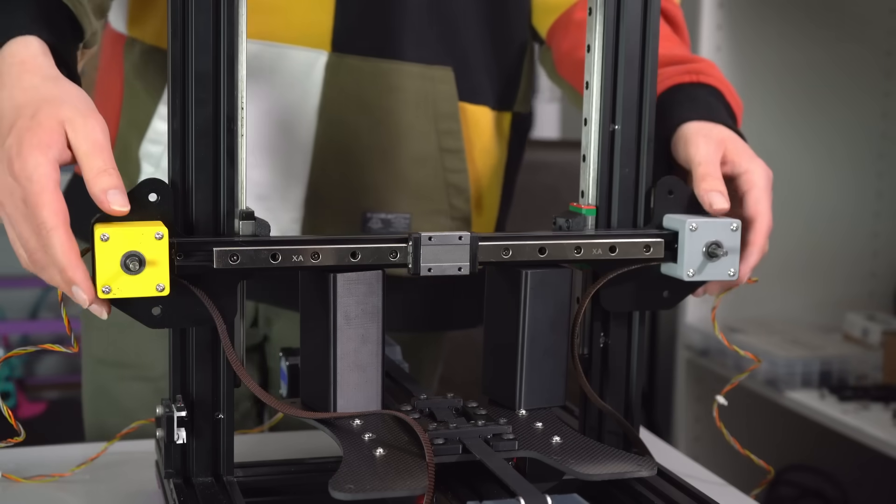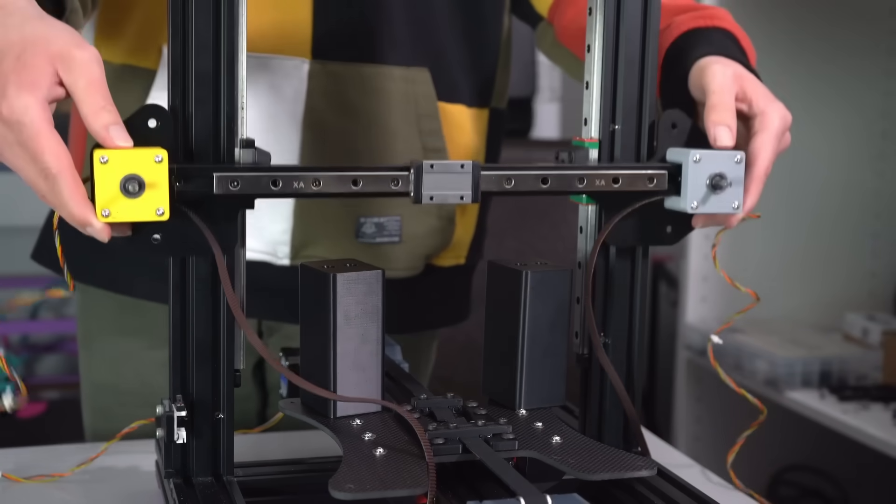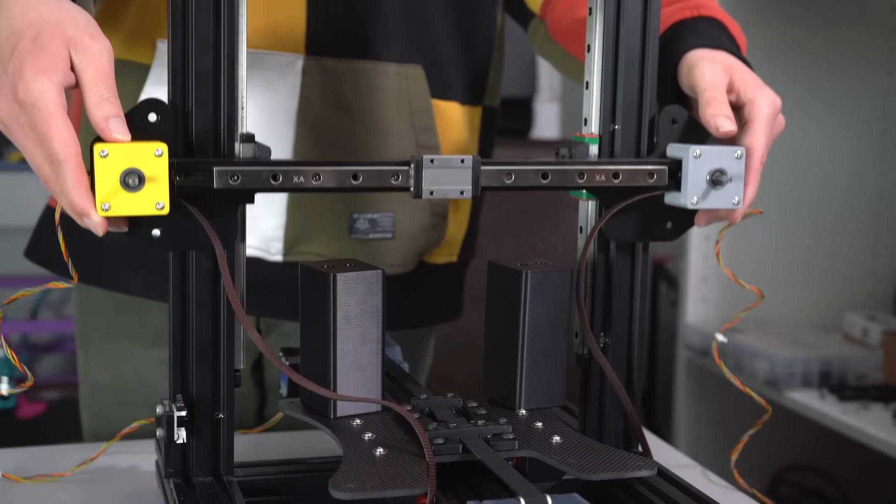Now that we have the X axis mostly assembled, we can put the whole thing together on the printer. Getting everything aligned here was pretty annoying, but it was worth it, because in the end I had a super simple all-wheel drive setup. One thing you've most likely noticed is that there's currently no way to tension the belts.